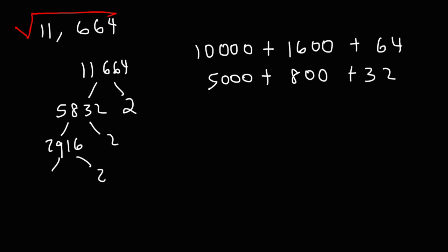Now 29 doesn't go evenly. So let's break that up into 2,800 plus 100 plus 16. It'll be easier to divide this number by 2 that way. Half of 2,800 is 1,400. Half of 100 is 50. Half of 16 is 8. So we're going to get 1,458. And then we're going to divide it by 2. Half of 14 is 7. Half of 58 is 29.